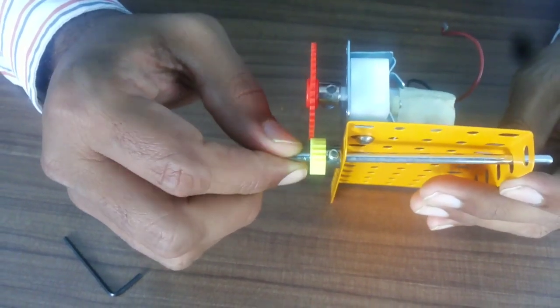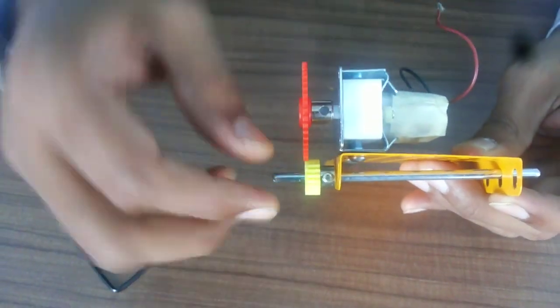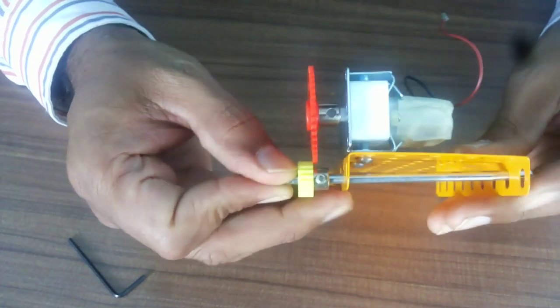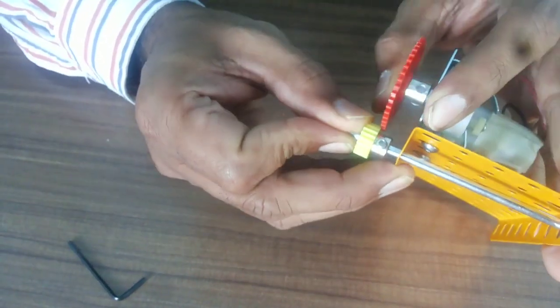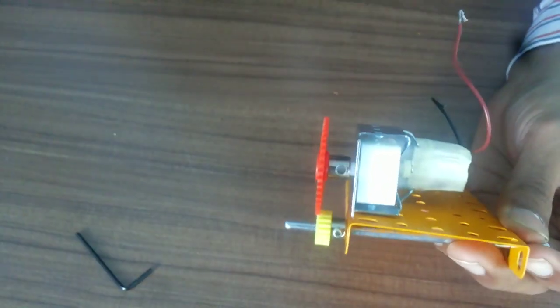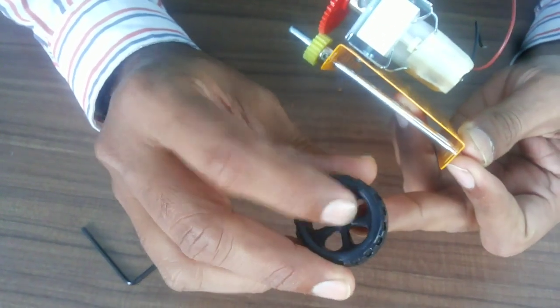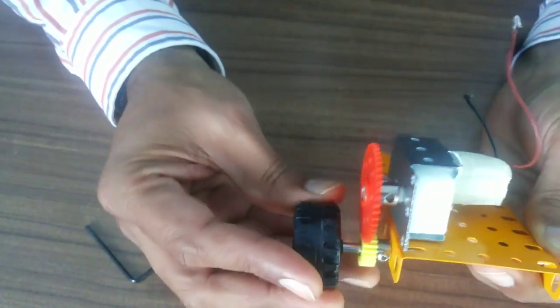This gear is now fixed with Allen key and it is facing with this gears. Don't try to move it, it will damage the gears inside the motor. Just you have to do it like this. Then put a wheel from this side - it is flat on this side and this side you have to connect this wheel.